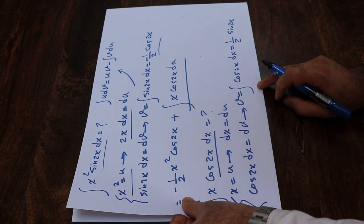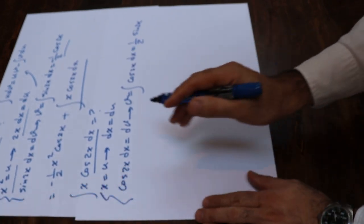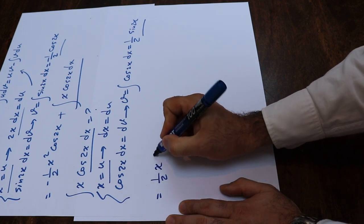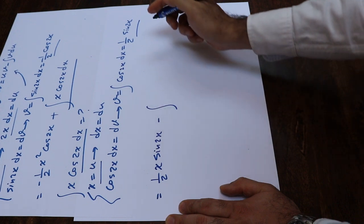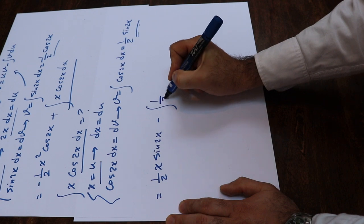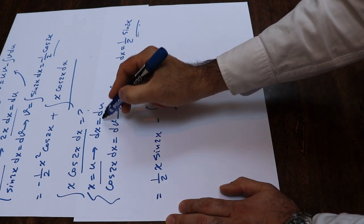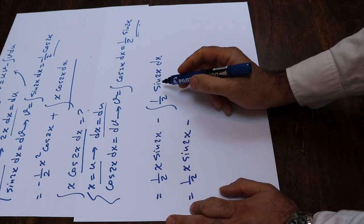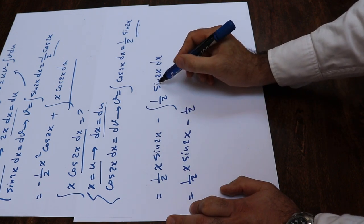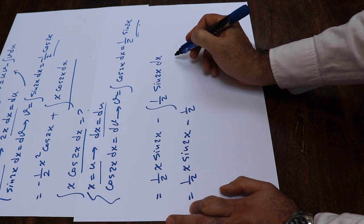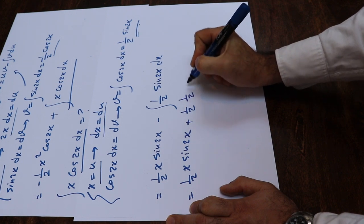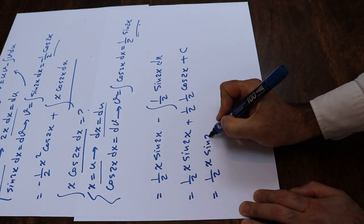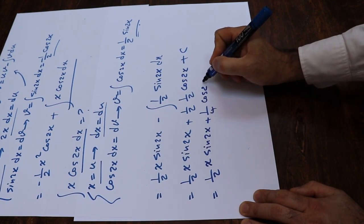If you substitute these equations into the formula, this integral will equal uv minus the integral of v du. That is 1/2 · x · sine(2x) minus the integral of 1/2 sine(2x) dx, where du equals dx. This works out to 1/2 x sine(2x) minus 1/2 times minus 1/2 cosine(2x), and that minus times minus gives plus, so we get 1/2 x sine(2x) plus 1/4 cosine(2x) plus C.